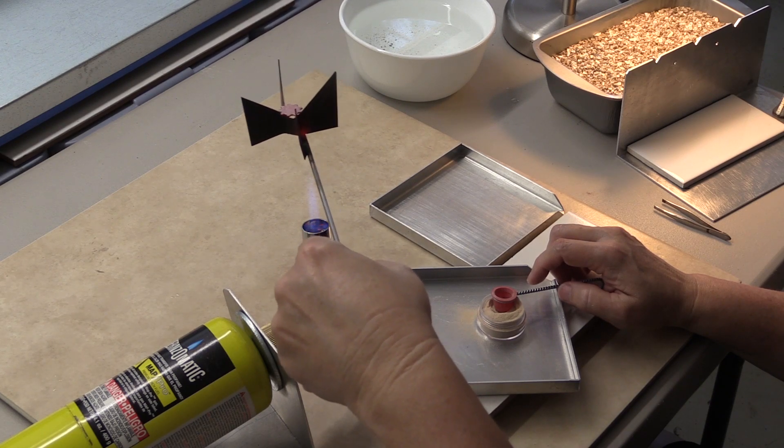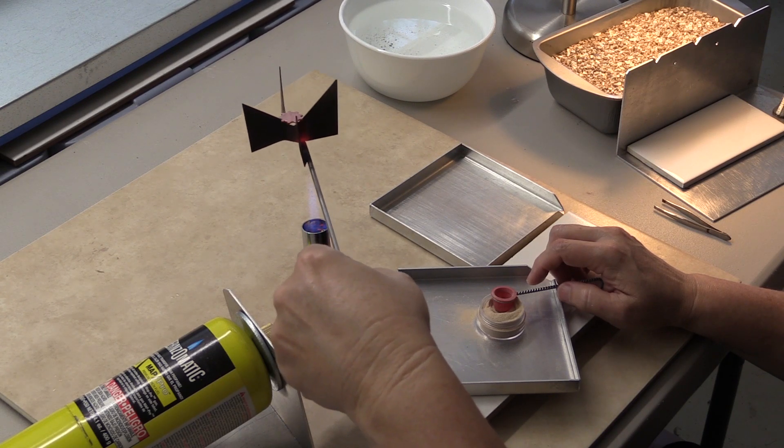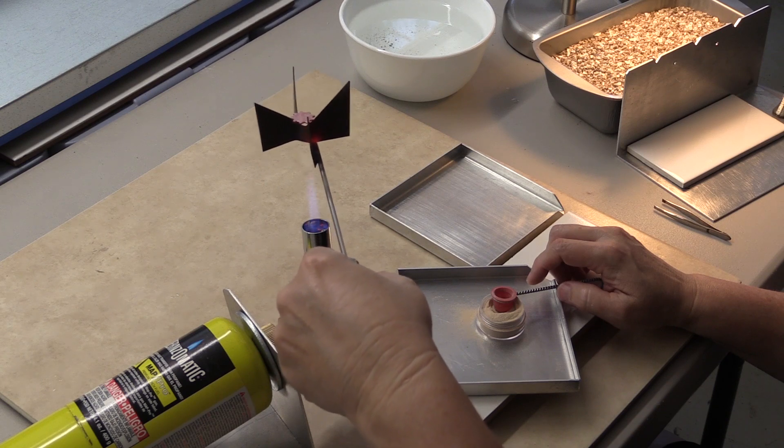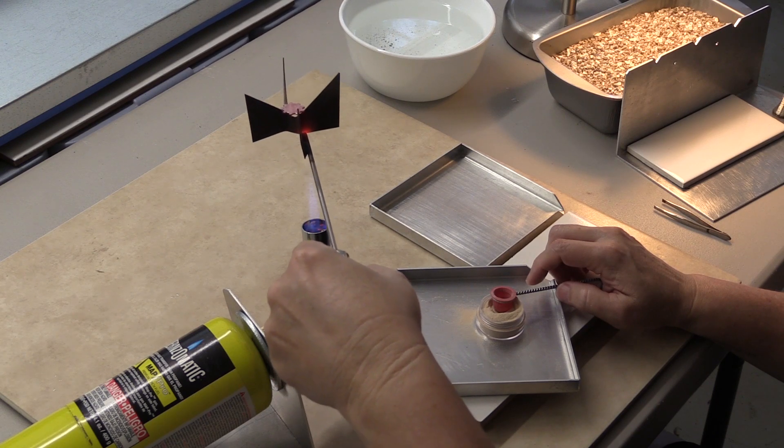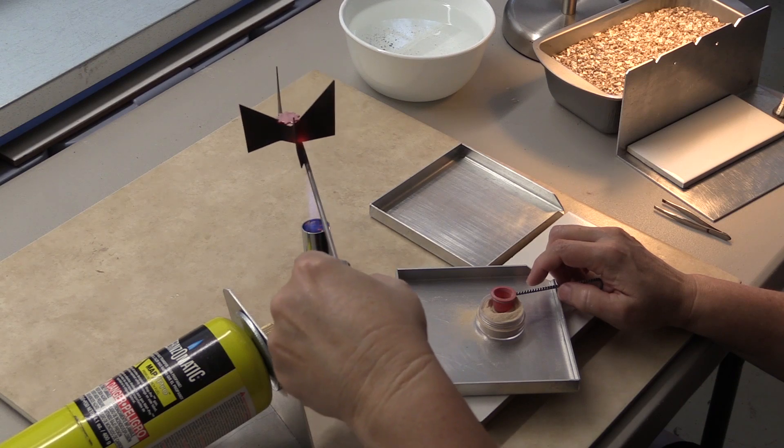If you want to make earring components or bracelet components, necklace components, you can do so by using the four prong or three prong.